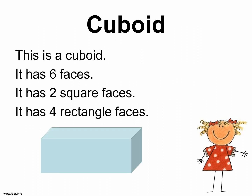This is a cuboid. It has 6 faces — it has 2 square faces and 4 rectangle faces. When you are observing a cuboid, it has 2 square faces on the side and 4 rectangle faces going around it. Parents, please allow your child to walk around their environment and observe if there are any objects in the shape of a cuboid. Allow them to count the faces, observe the square face versus the rectangle face, and interact with the objects so that they can make that connection.